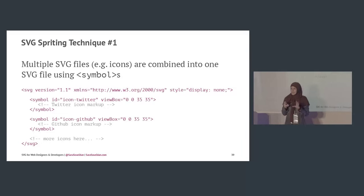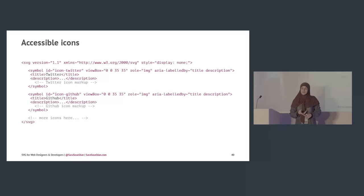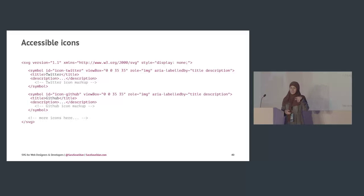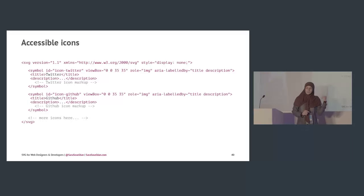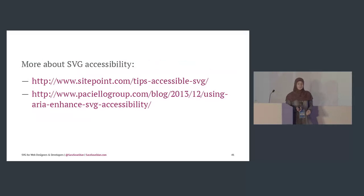Since we're talking about code — how to make SVGs accessible. In SVG you have a title and a description tag. These can go into any group, symbol, or the main SVG. The title gives a title to the image, the description adds a description. There are also the role='image' and aria-labelledby attributes for more accessibility. If you have multiple symbols, give each symbol these elements, and every instance of the icon will be accessible.